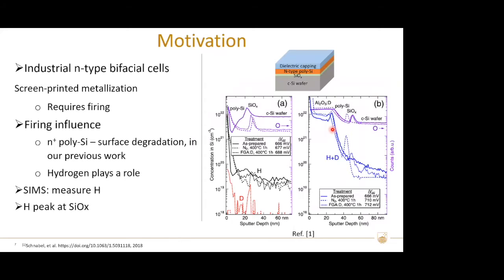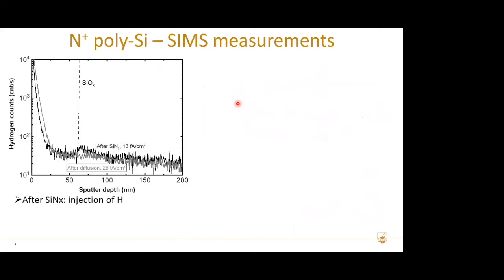For further investigation, we apply SIMS to measure hydrogen content in poly-silicon passivated samples and correlate the measured hydrogen to the J0 value. SIMS is an effective tool for hydrogen measurement in such samples. We are particularly interested in hydrogen surrounding the thin oxide, which determines surface passivation quality of poly-silicon passivating contacts. This slide shows hydrogen profiles in poly-silicon/silicon-oxide stacks measured by SIMS. After phosphorous diffusion, shown by the gray curve, no obvious hydrogen peaks were detected. After nitride deposition, shown by the black curve, there was a small hydrogen peak surrounding the thin oxide.